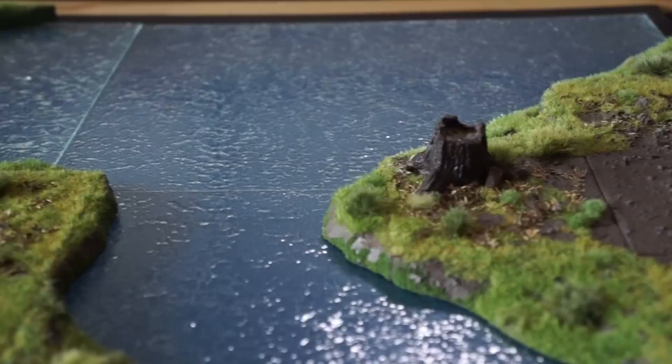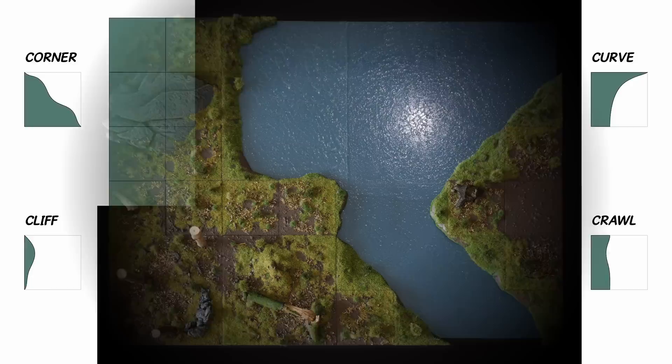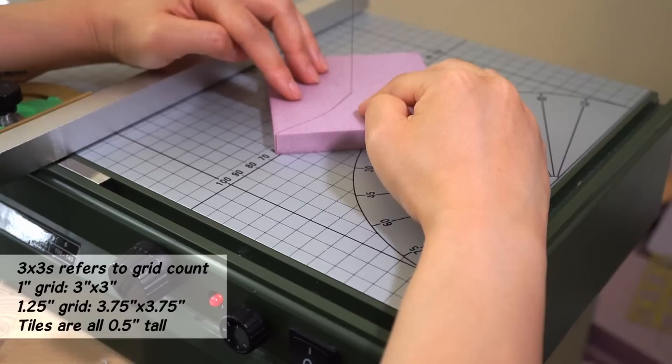There is something missing though. Returning to our modular drawing board, our coast tiles comprise of four different shapes. Henceforth they shall be dubbed corners, cliffs, curves, and crawls. It was very hard to find a fourth word to complete the alliteration.